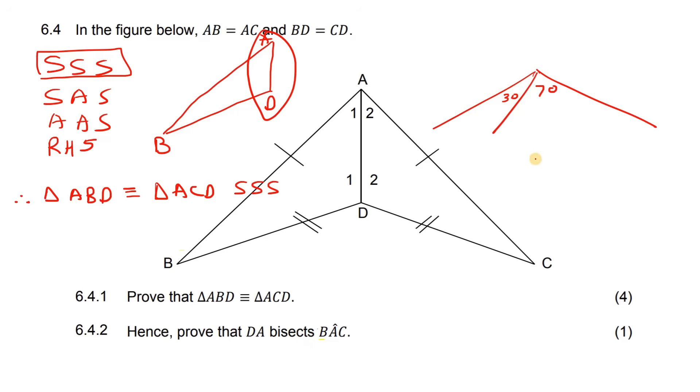To cut something in half means that this would be 50, for example, and this would also be 50. So, these two parts would be the same. So, what they are saying is prove that DA, this line, cuts this angle in half. So, they wanted us to show that these two are the same.